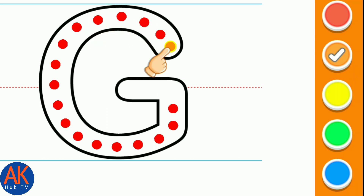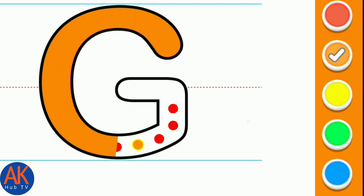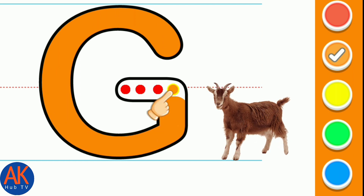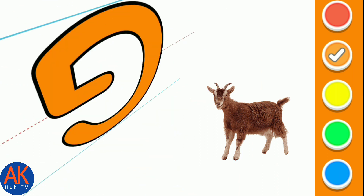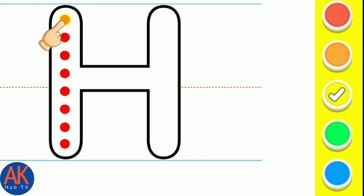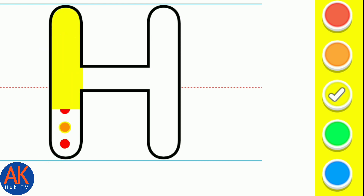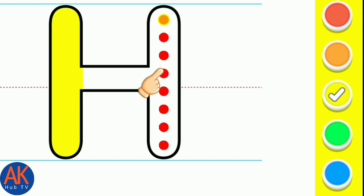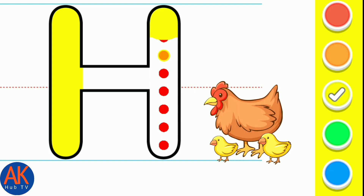G. Orange. G for Boat. H. Yellow. H for Hen.